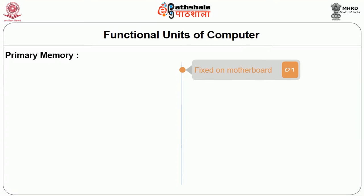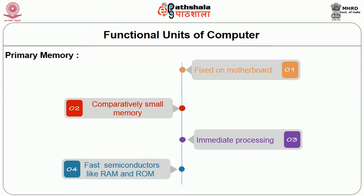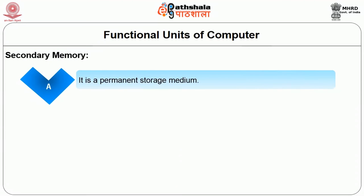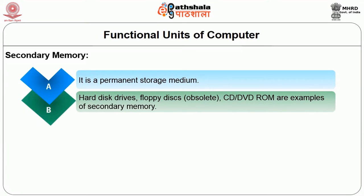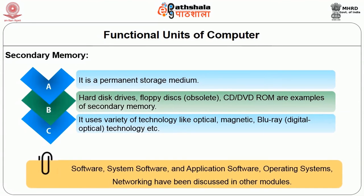When power is switched off, everything stored in memory gets erased — this is known as volatile memory. If memory does not get erased when power is off, it is known as non-volatile memory. Memories are divided into two basic categories: primary memory and secondary memory. Primary memory is fixed on the motherboard and is made of fast semiconductors; examples are RAM and ROM. Secondary memory is a permanent storage medium; hard disk drives, CDs, and DVD-ROMs are examples, using technologies like optical, magnetic, and Blu-ray. In this unit we have seen the generations and functional units of computers, and other modules have discussed software, system software, application software, operating systems, networking, etc.